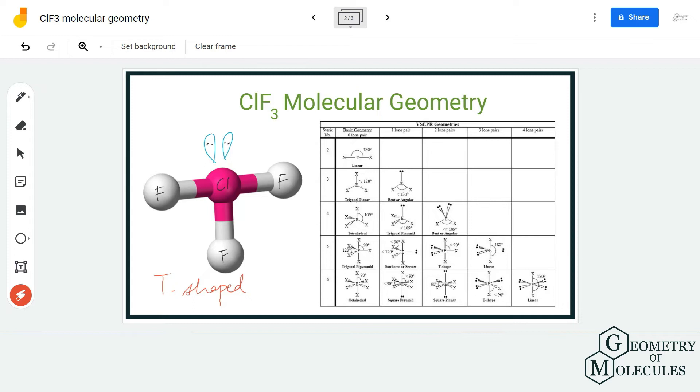see if t-shaped molecular geometry is the right answer for ClF3. So when it comes to steric number, it is the sum total of all the electron regions on the central atom. Here the central atom is forming bonds with